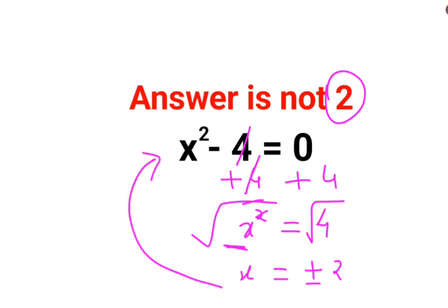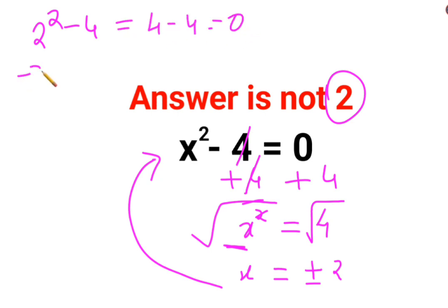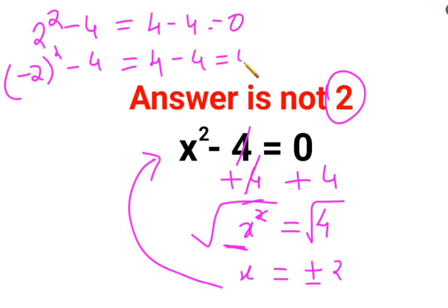Let's put it back into this question. We put 2 squared minus 4 — the answer is 4 minus 4, which equals 0. The next check: negative 2, whole squared minus 4 — the square of a negative number is positive, so that answer is also 0.